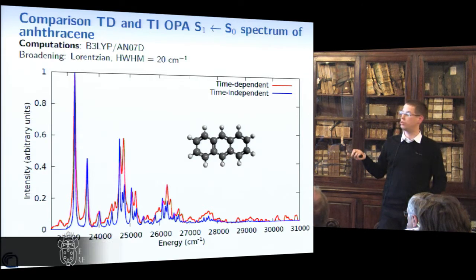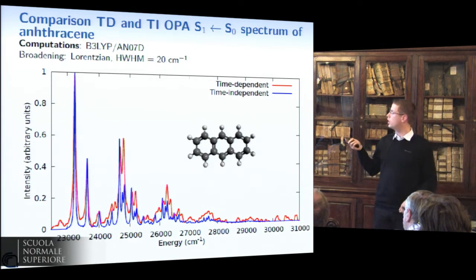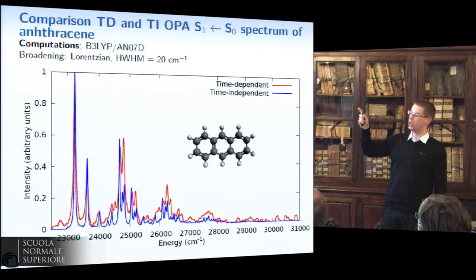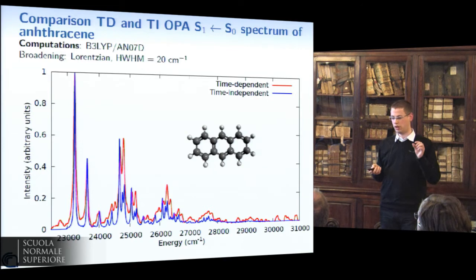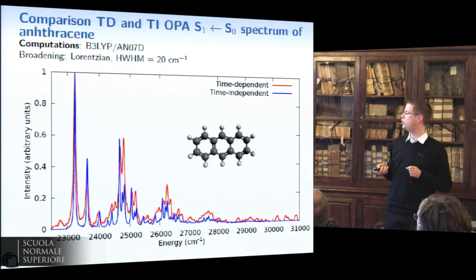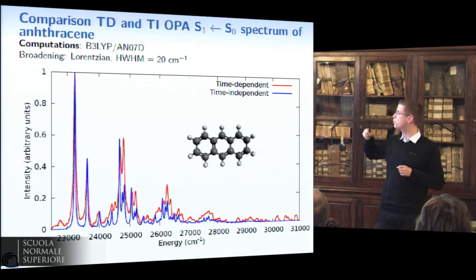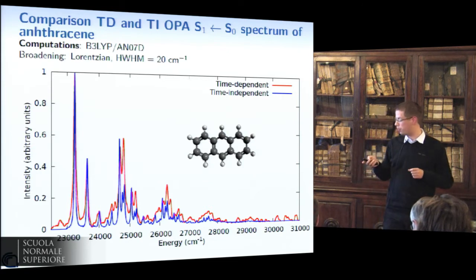For example, we used anthracene, which is a very rigid system where vibronic spectroscopy is quite straightforward to compute. We made a benchmark to check the implementation for the time-dependent and time-independent approaches at high spectral resolution. In general we have an oscillation from the path integral approach so we don't get exactly the same spectrum, but the overall agreement is very high.